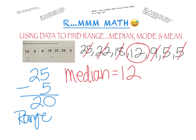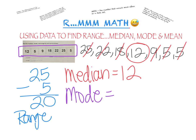Next, we have to find the mode. Looking at all of our numbers, which one do we see the most? Which one is repeated? Which one is shown the most often? That's right — five. Because we had to write that two times. So that's the number that occurs the most. That is the mode.